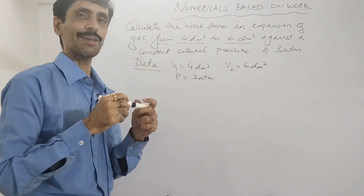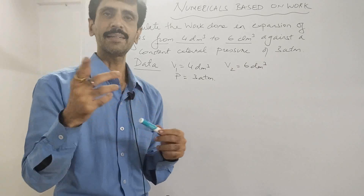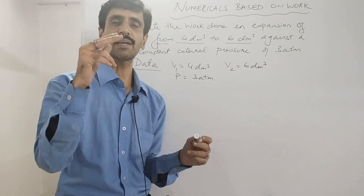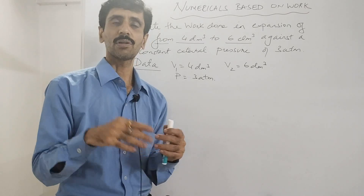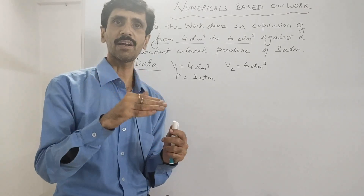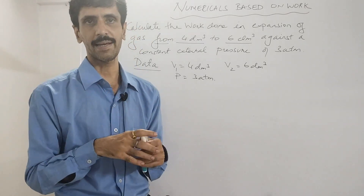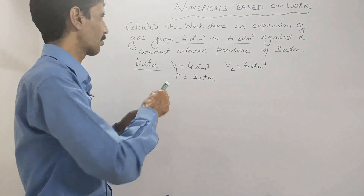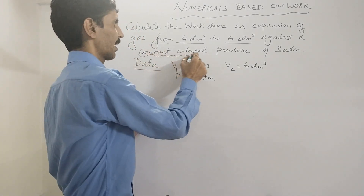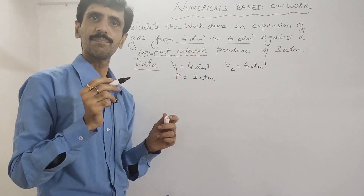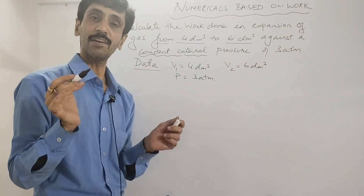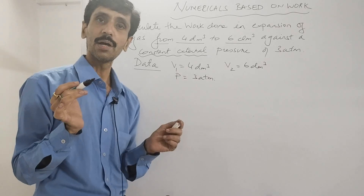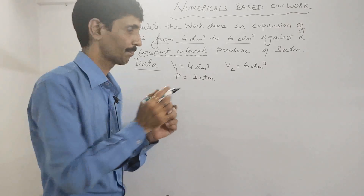Now we have to calculate work. You have to remember the theory sessions uploaded previously — there are different formulas for work. The important condition here is constant external pressure. When pressure is constant, the formula we use is W = −PΔV.